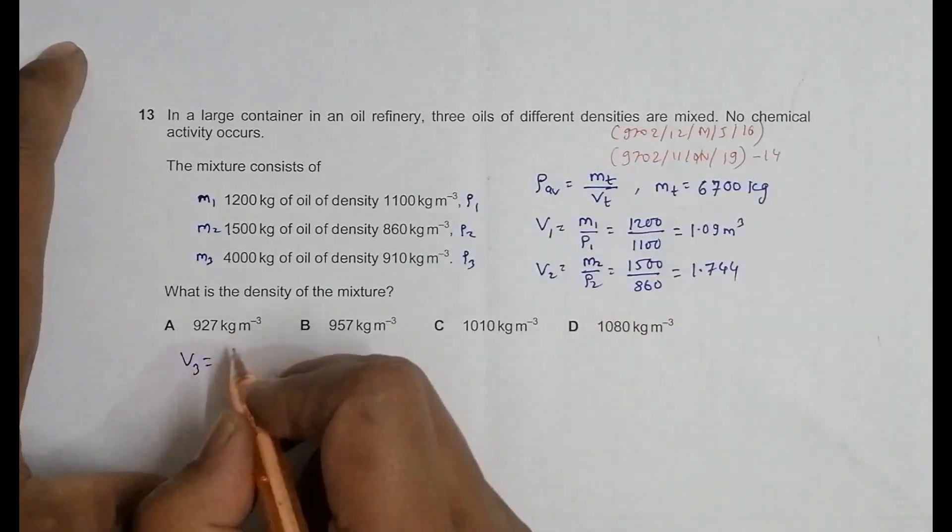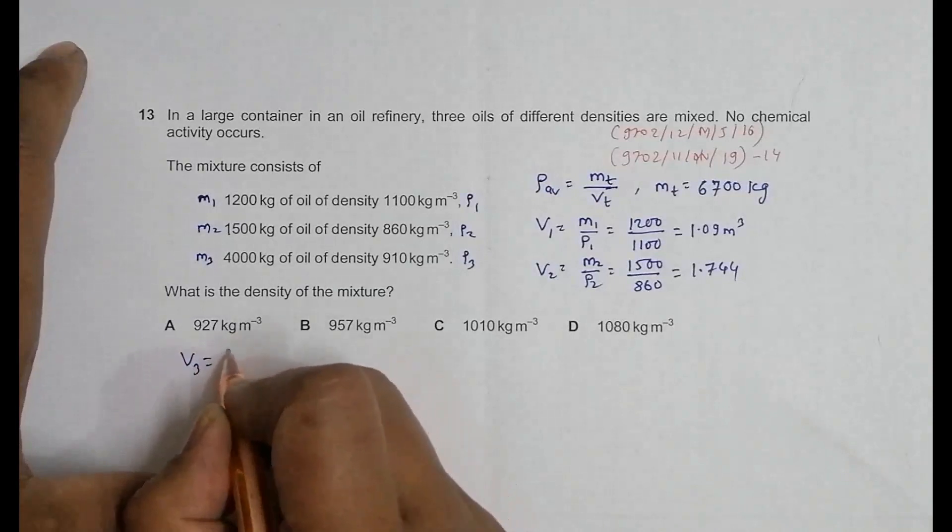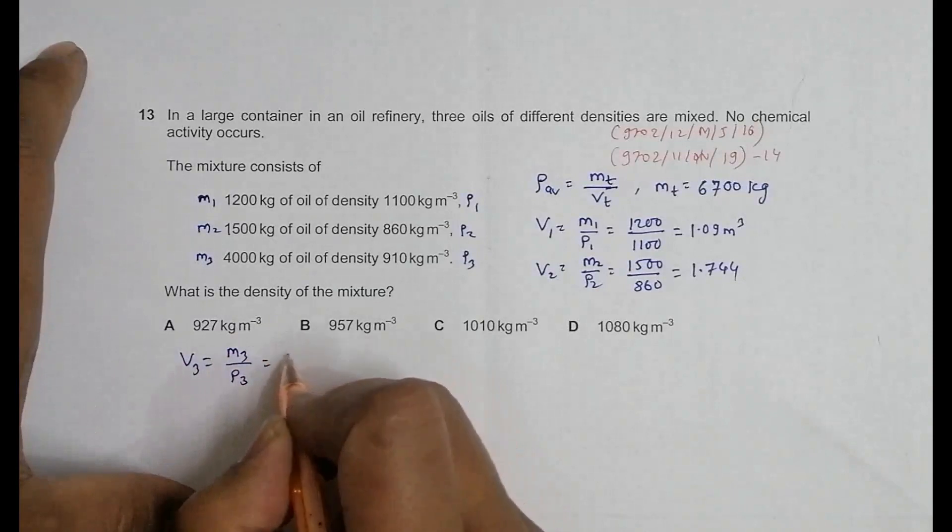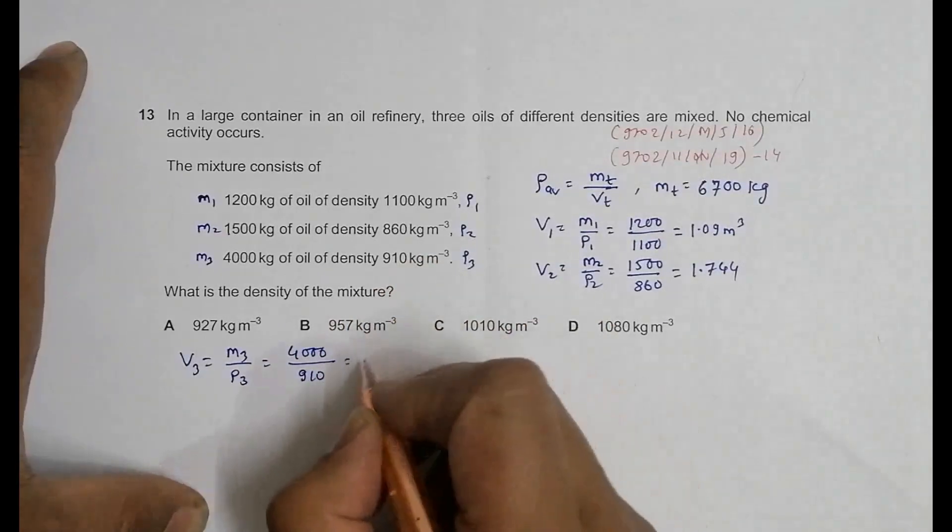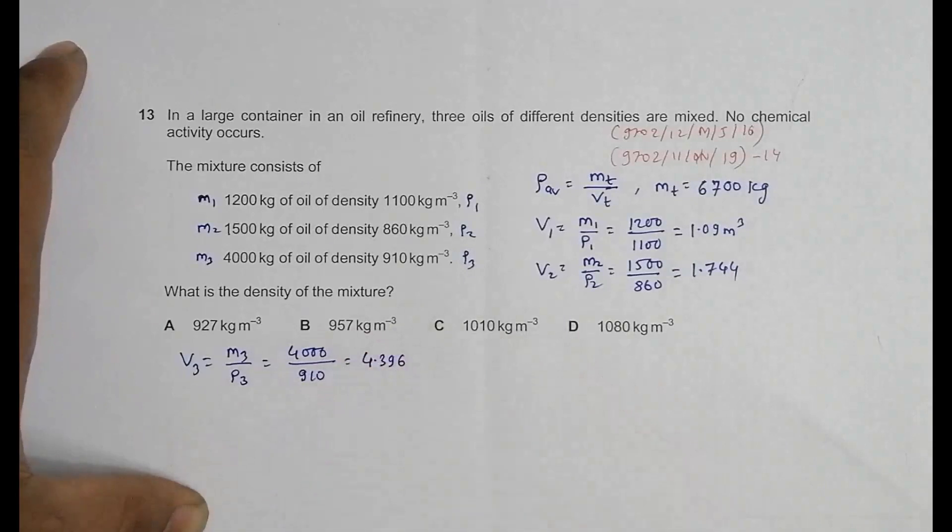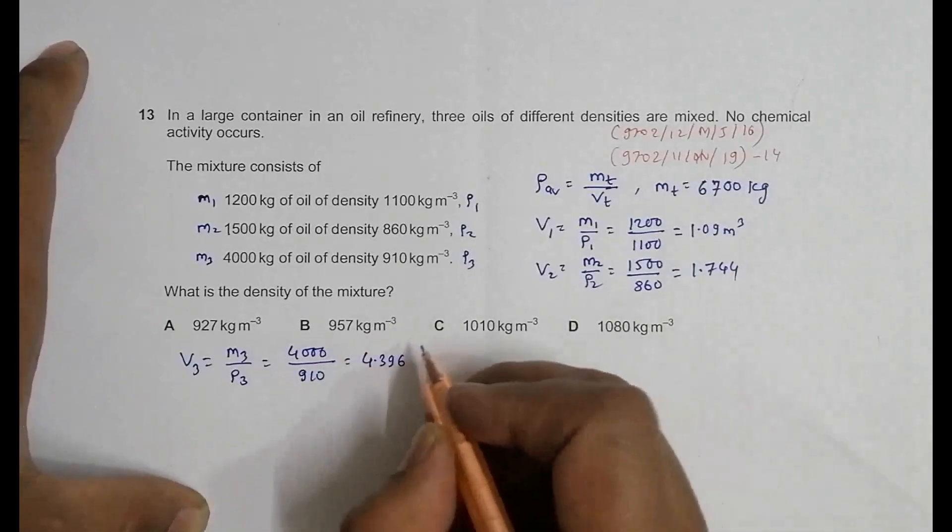V3 is equal to m3 by ρ3, and that's equal to 4000 divided by 910, which equals 4.396 meter cubed. So we have got all the volumes.